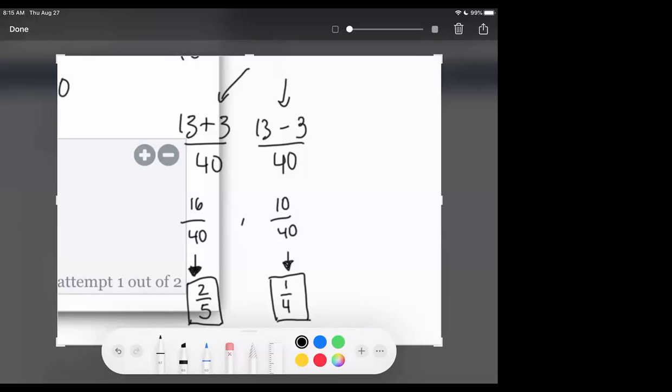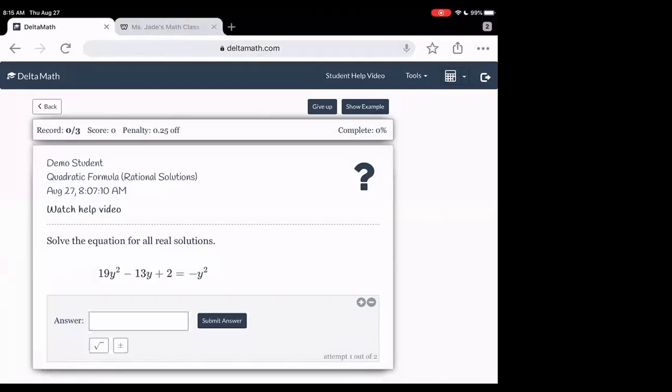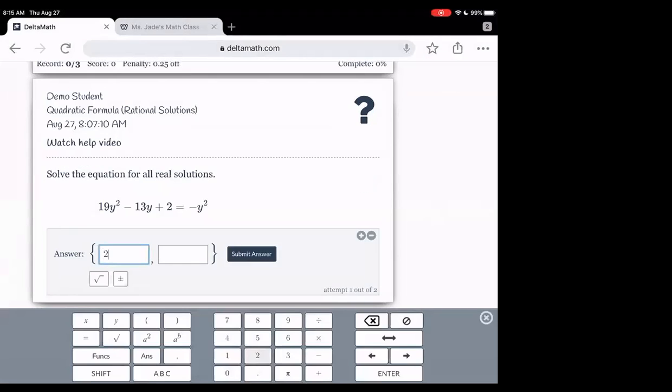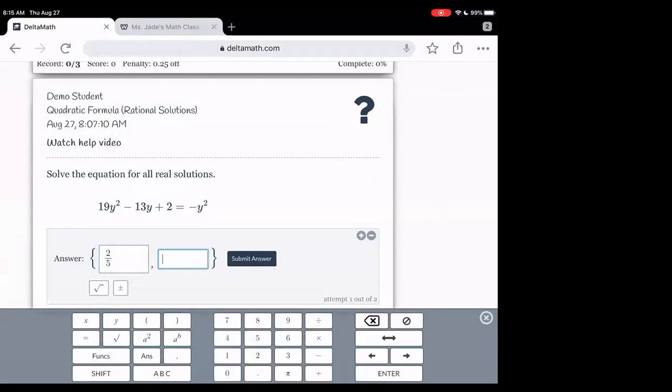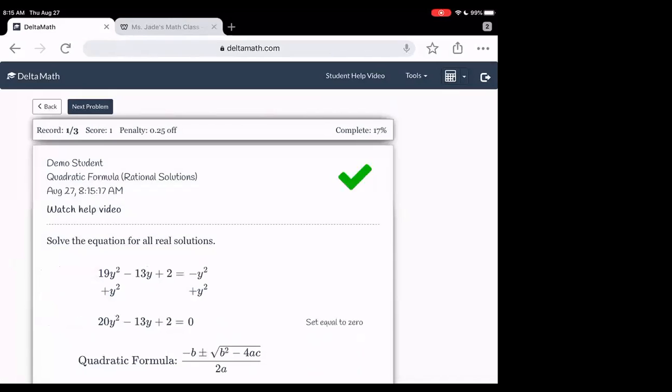Okay, I'm going to enter this. 2/5 and 1/4. So since there's two answers, I believe I'm going to have to press it like that. 2/5 and 1/4. And it says, good.